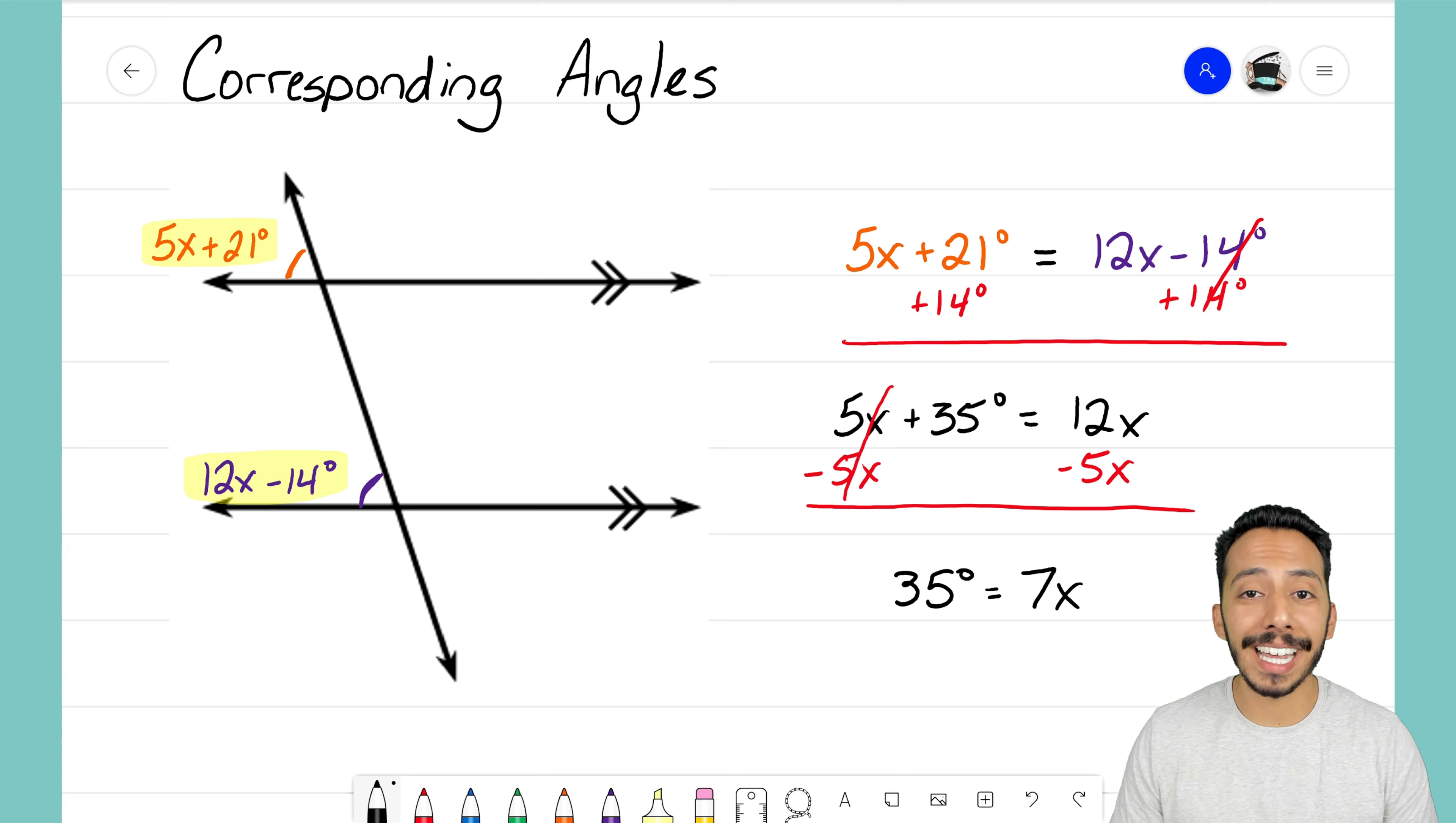I almost have what x is. I have 7x, I just want one though. So to get that final x all by itself, I need to divide both sides by that coefficient of 7. Doing so, we'll cancel out that last one, and I'm left with x equals 35 divided by 7, which is 5 degrees.